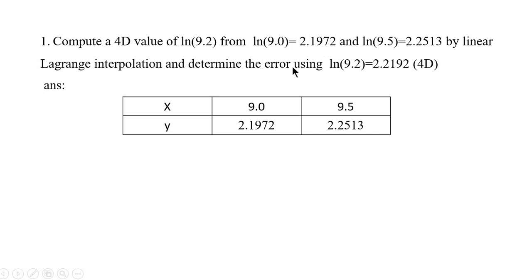For 9.0, log of 9.0 is 2.1972. For 9.5, log of 9.5 is 2.2513, and we know the function is log of x where x is 9.2. Let us name these tabled values as x0, y0 and x1, y1.